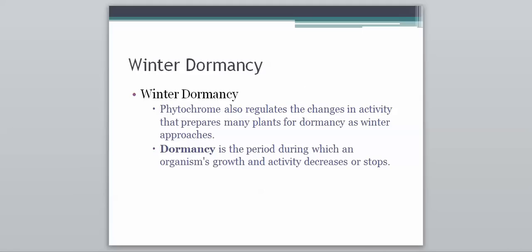Phytochrome serves another function as well: it regulates the changes in activity that prepare many plants for dormancy as winter approaches. Seeds can go dormant — alive but not growing. Dormancy in plants is a period during which an organism's growth and activity decreases or stops. It's basically plant hibernation, and it is controlled by phytochrome.